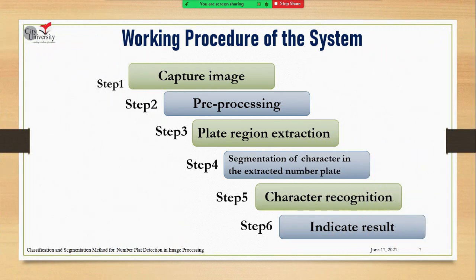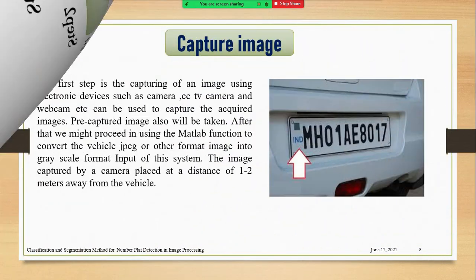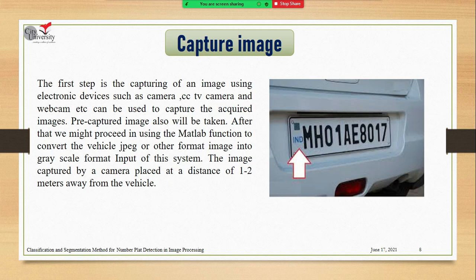Now I'm going to talk about the working procedure of the system, which is very important for getting accurate and good results. Our working procedure is divided into six steps: Step 1 — capture image; Step 2 — pre-processing; Step 3 — plate region extraction; Step 4 — segmentation of characters in the extracted number plate; Step 5 — character recognition; Step 6 — indicate results.